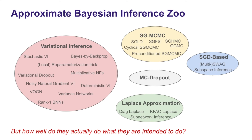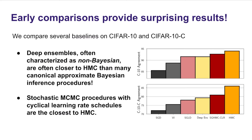But now that we've expended this computation, we can use it to really try to understand how well a variety of different approximate inference procedures do what they're really intended to do. Early comparisons provide surprising and very interesting results. Deep ensembles, which are often characterized as non-Bayesian, are often actually closer to this HMC reference than many canonical approximate Bayesian inference procedures — much closer, for instance, than variational inference. Stochastic MCMC procedures with cyclical learning rate schedules were typically the closest to HMC so far.